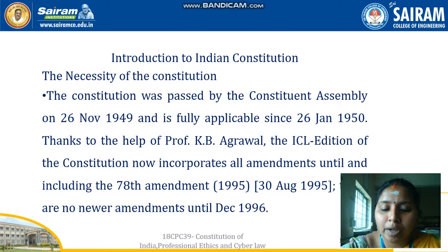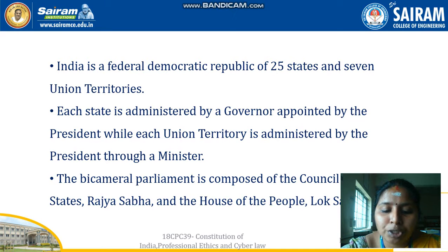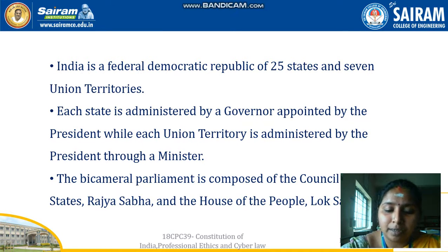The House of the People is composed of 550 members, in which 530 members are from the states and 20 members are from the union territories. There are some extraordinary features of the Indian system of government. For example, the constitution encourages states to have unicameral legislatures. Upper houses re-elect one-third of their members every two years. Legislative members are chosen by direct election. The states of Andhra Pradesh, Manipur, and Haryana have already banned the production, possession, and consumption of alcohol.